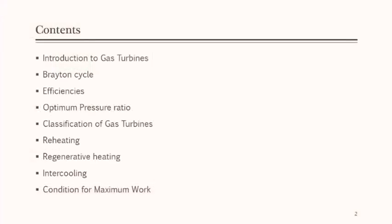We are discussing the contents of gas turbines. First, the Brayton cycle, which is the ideal cycle for conventional gas turbines. We will consider air as the working fluid, with different quantities such as specific heat, Cp for air and combustion gases. The topics we will discuss include: efficiencies, classifications, reheating, regenerative heating, intercooling, and conditions for maximum work.